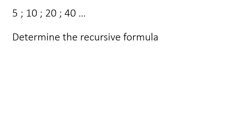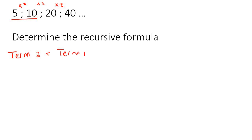Here we have a geometric sequence. We can tell this by seeing that we are multiplying by 2 each time. So determine the recursive formula. For recursive, just look at the first two terms — how do you go from term 1 to term 2? Well, you multiply by 2. So we could say that term 2 is equal to term 1 multiplied by 2.